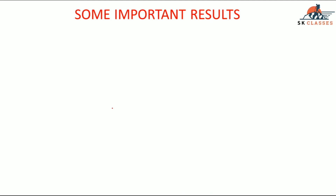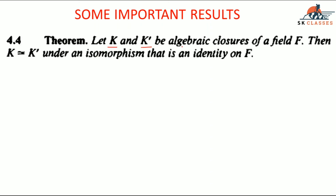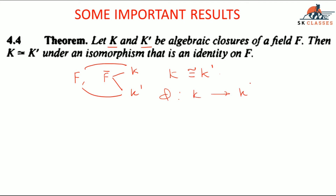Now here are some important results you should know. First: let k and k' be algebraic closures of a field f, then k is isomorphic to k' under an isomorphism that is the identity on f. So if a field has two algebraic closures k and k', they will be isomorphic to each other, and the isomorphism mapping from k to k' will preserve the elements of f.